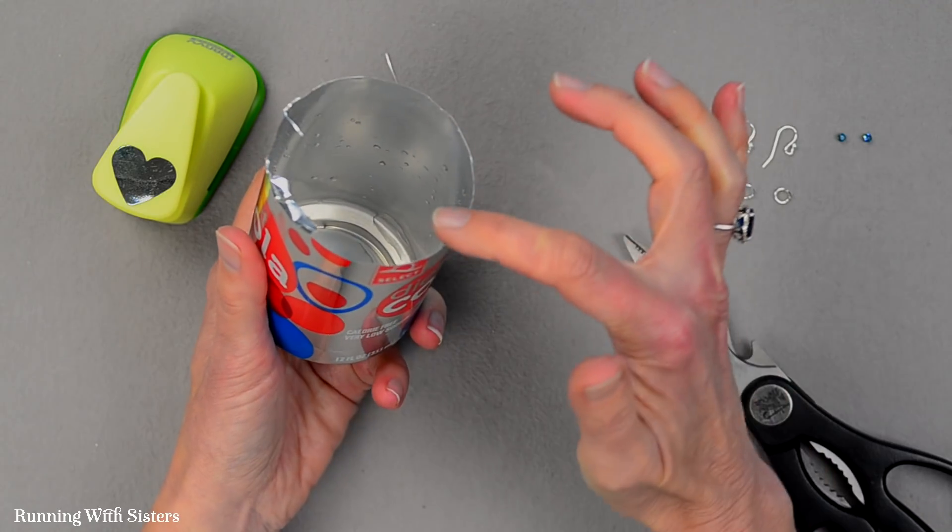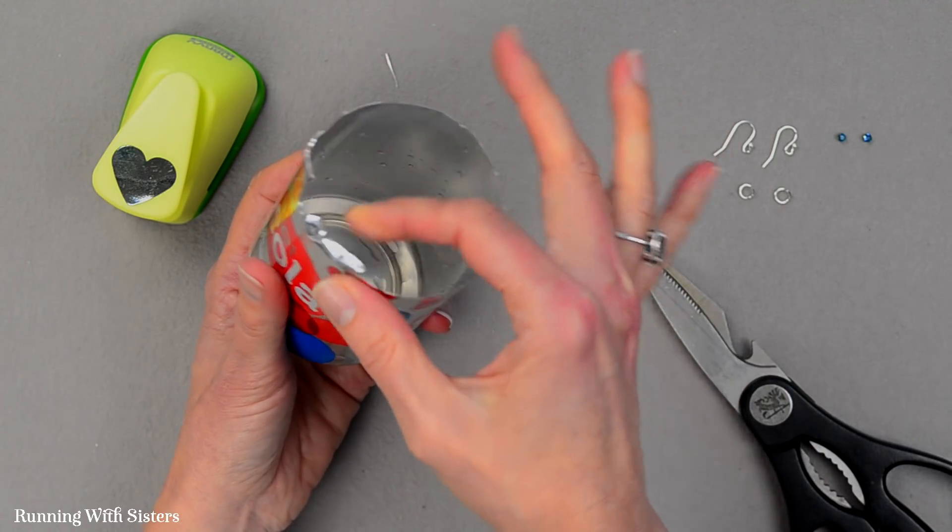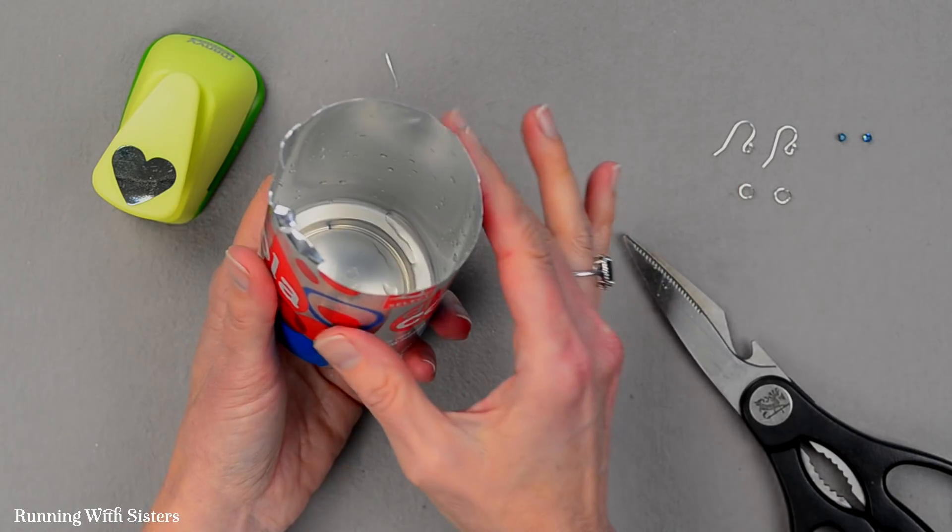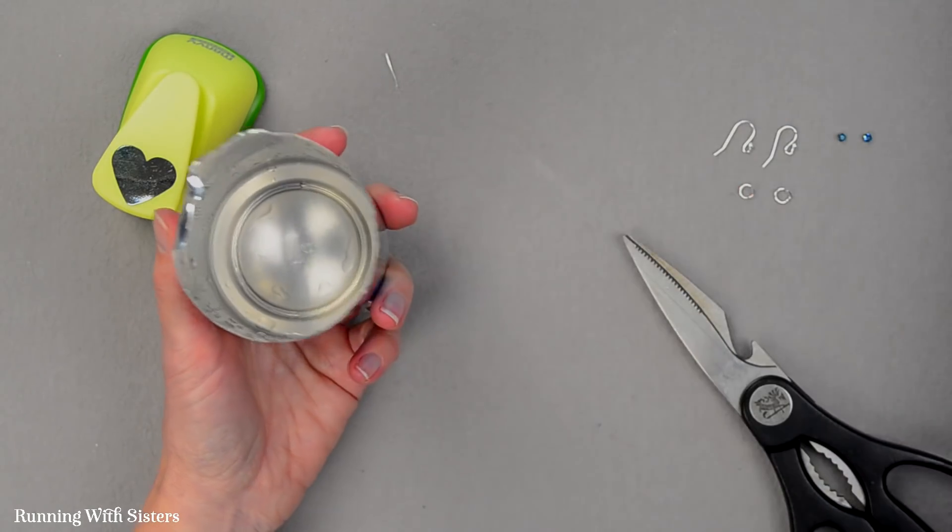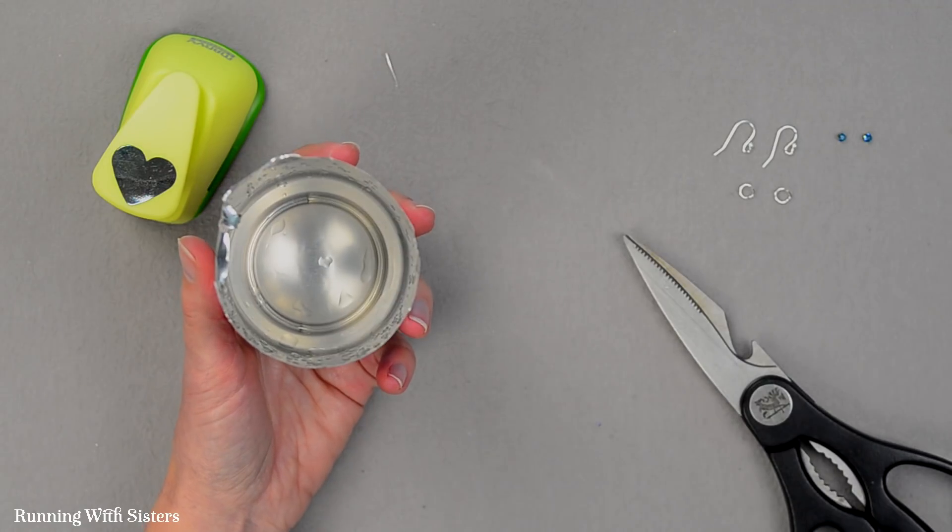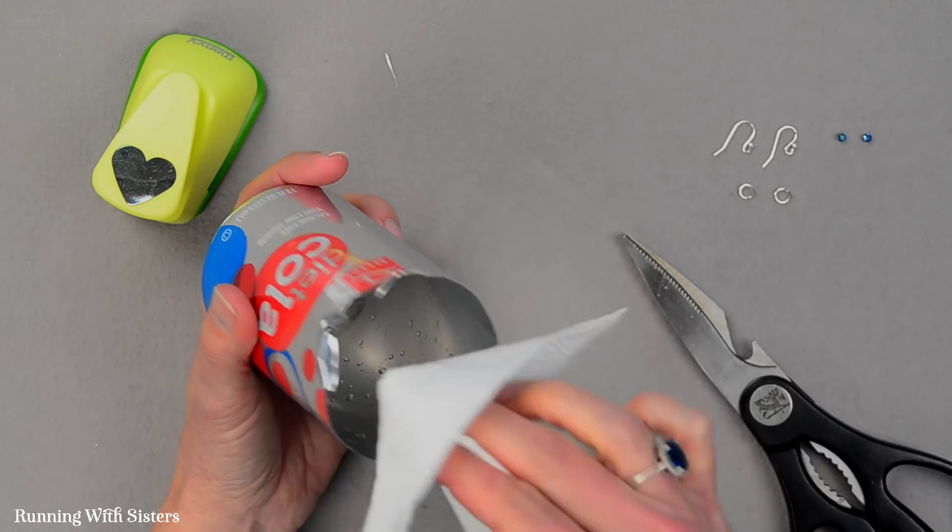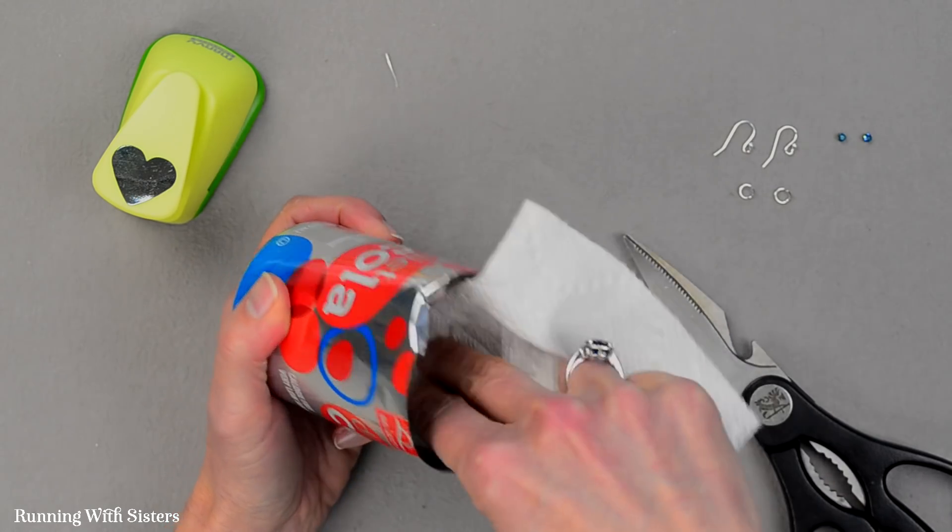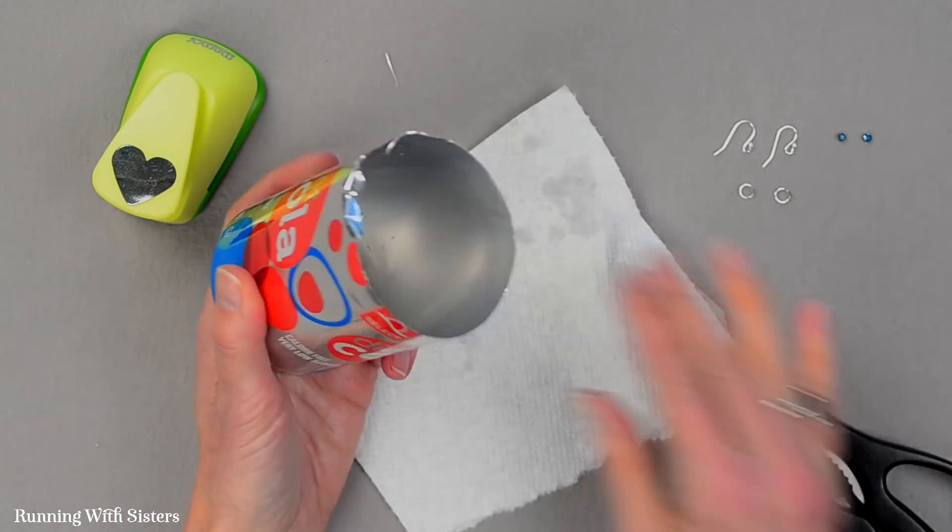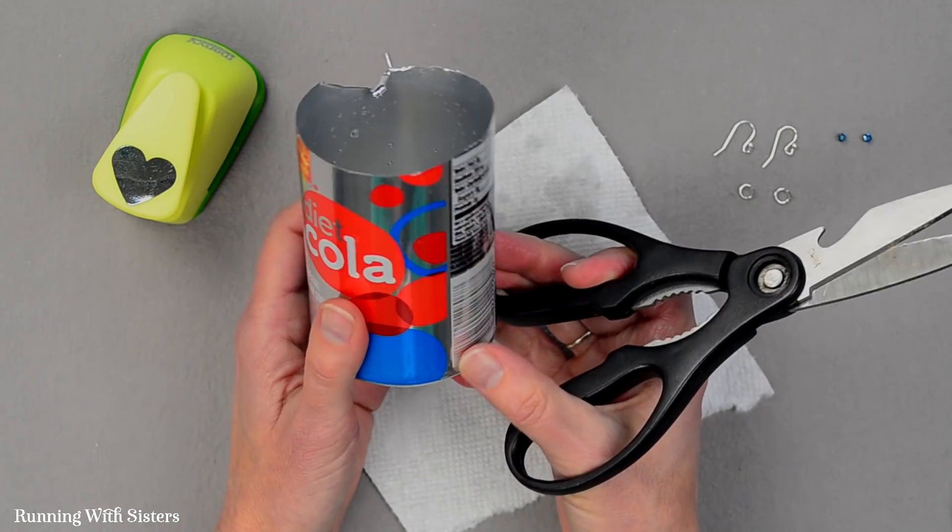And you can see that I've got some tin edges here that are a little bit pokey. Just be careful. It's not actually that crazy sharp but just be careful so you don't cut yourself. And I'm going to take a paper towel and we're going to just sort of wipe out a little bit of the fluid here so it doesn't get all over my work surface.